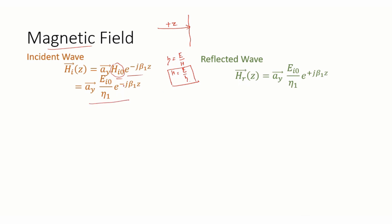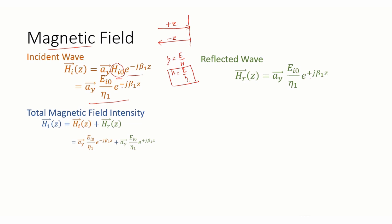To find the total magnetic field intensity, add the incident and reflected waves and substitute both equations. We can take EI0/η₁ common from both terms. We then use the formula 2cosθ = e^(jθ) + e^(−jθ) — since there is a plus sign, we use cosine. Substituting, we get the total magnetic field intensity H1(z) = y-hat · (EI0/η₁) · 2cos(β₁z).